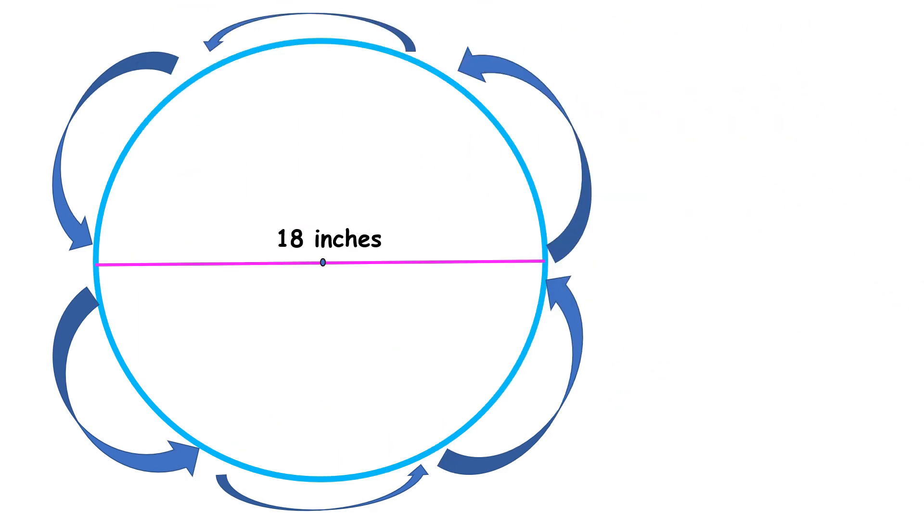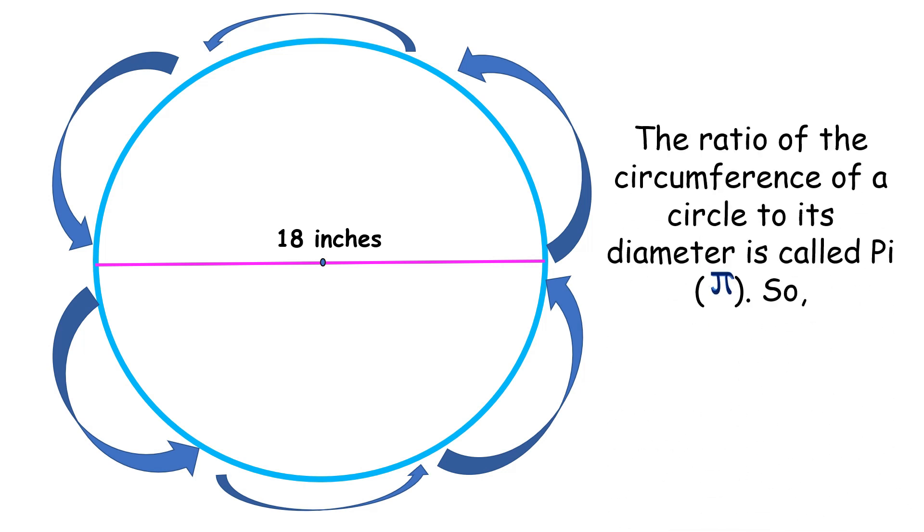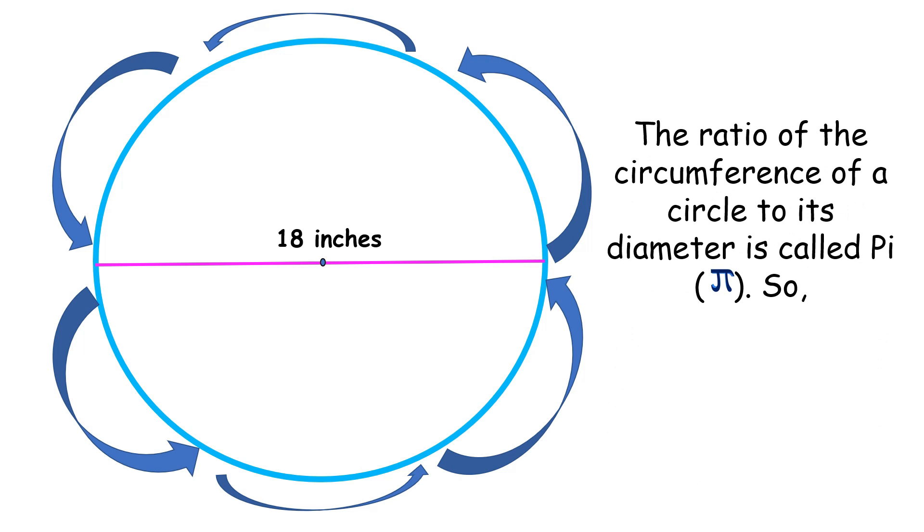Before we answer, we're going to discuss first the ratio between the circumference of the circle to each diameter. The ratio of the circumference of a circle to each diameter is called pi. This is the symbol for pi.